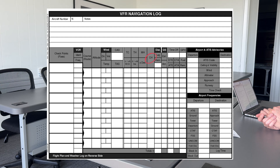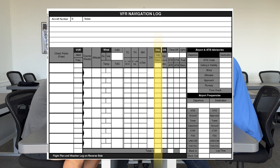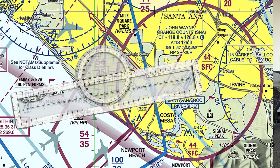How did you determine the distance for each leg? From John Wayne to Huntington Beach Pier, I used my plotter on the sectional — specifically the inner part of the plotter to measure the distance between each leg, and that gave me the leg distance.